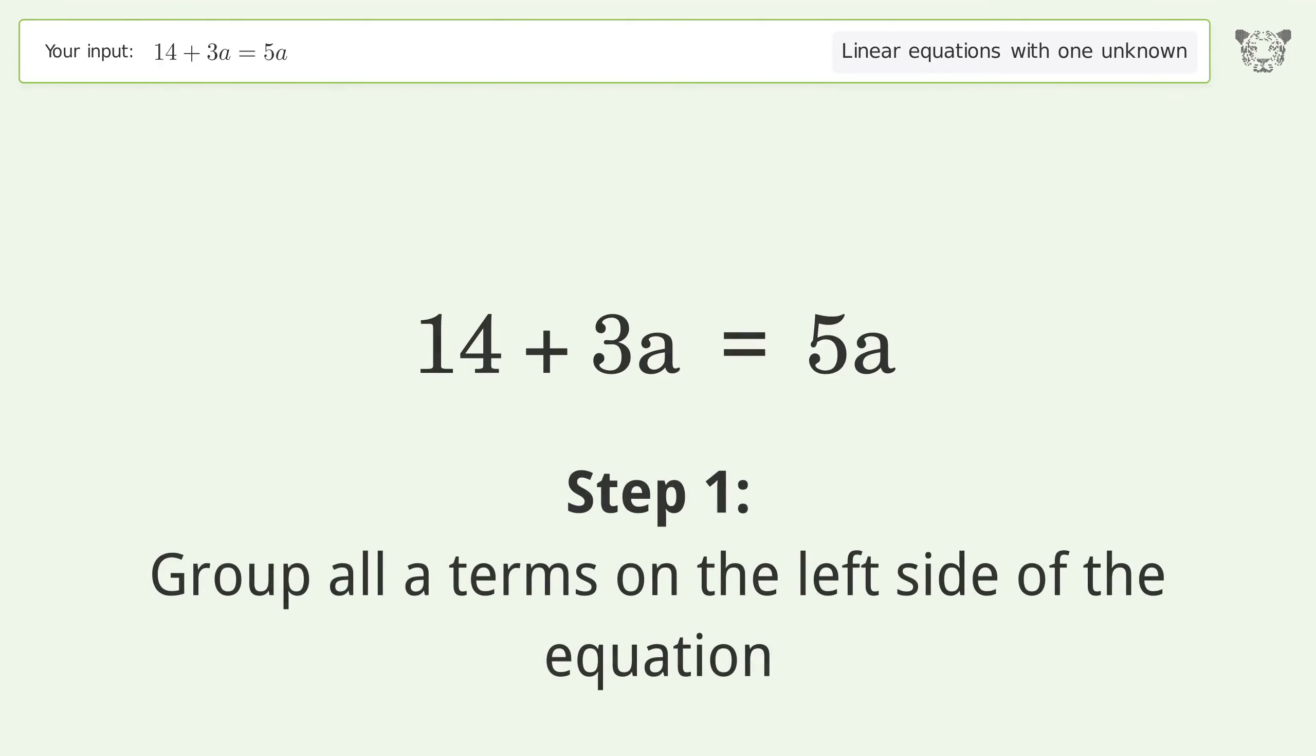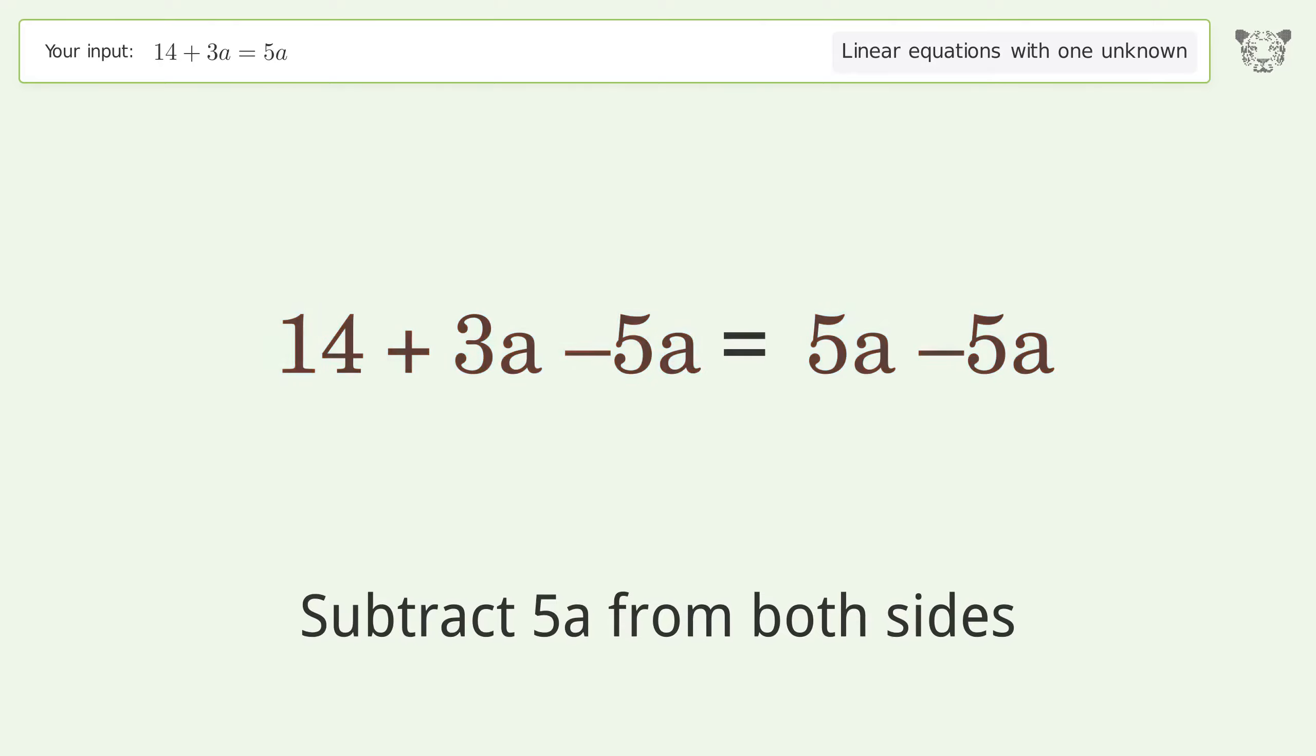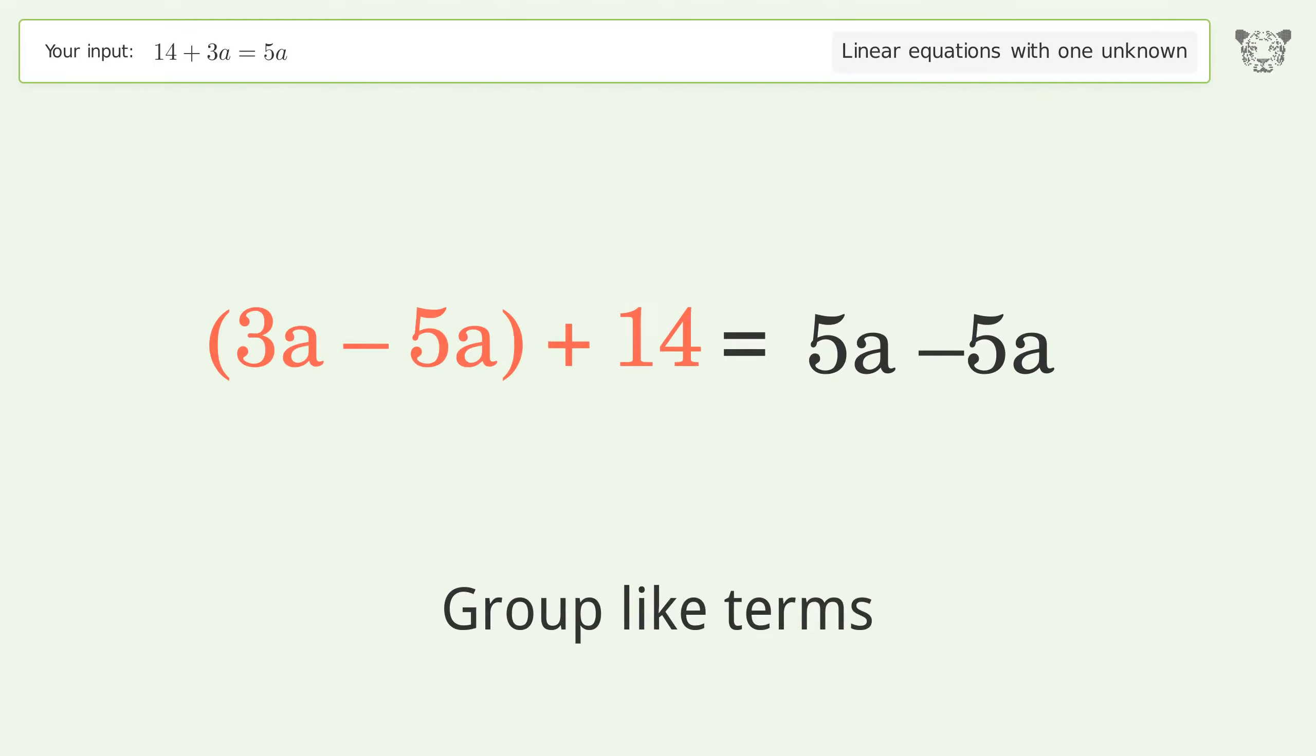Group all A terms on the left side of the equation. Subtract 5a from both sides. Group like terms. Simplify the arithmetic.